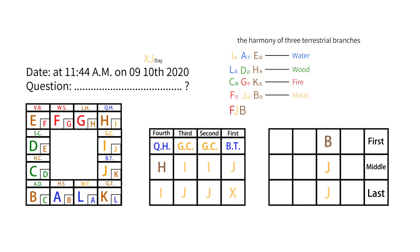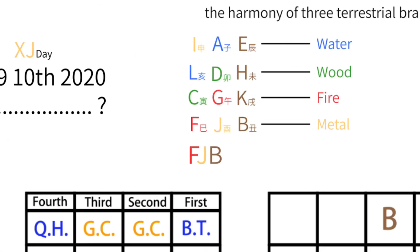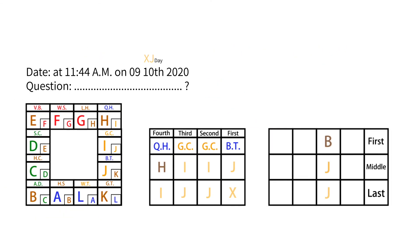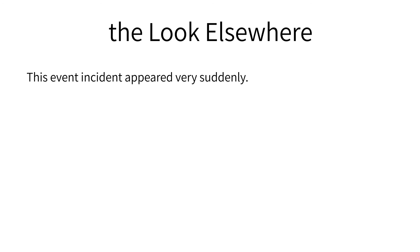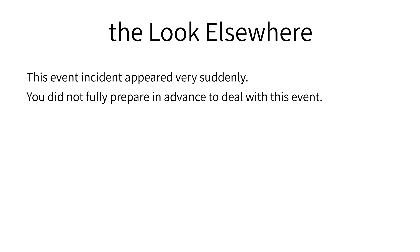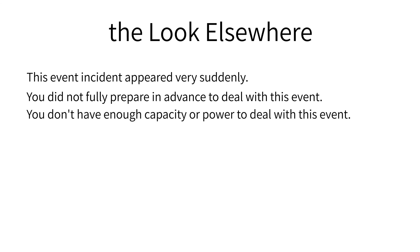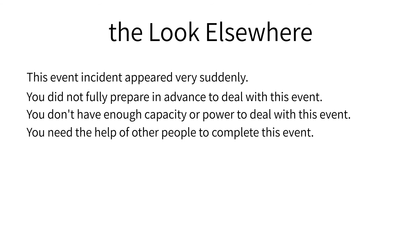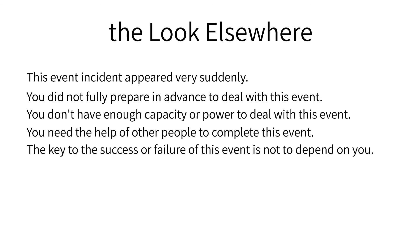You might wonder: J is preceded by B, so what precedes B? It is F, because of the circulation. When you predict the development of things and get this situation of four lessons and three transmissions, it means this event appeared very suddenly. You didn't fully prepare in advance, or you don't have enough capacity or power to deal with this event. You need the help of other people to complete it. The key to success or failure depends not on you, but on the person who helped you.